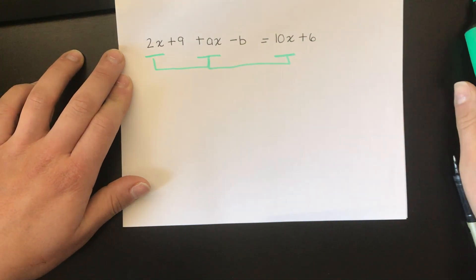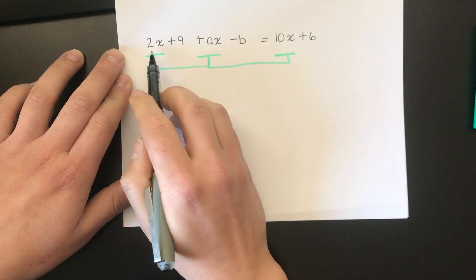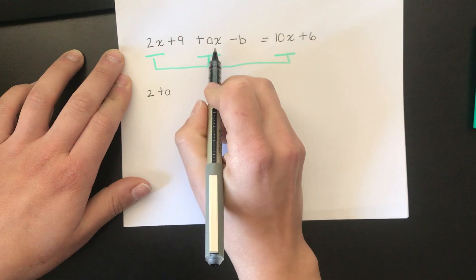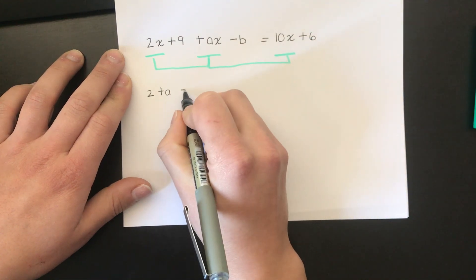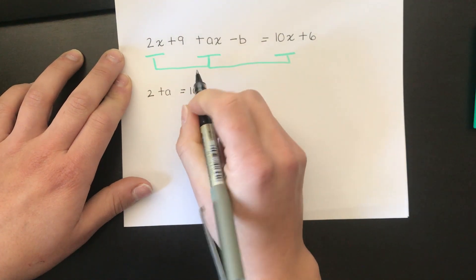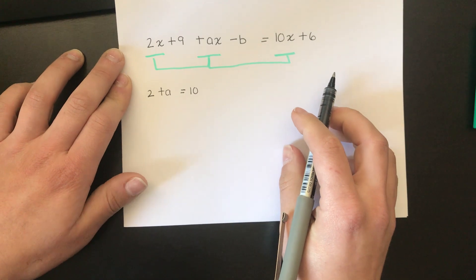From there I can write an equation. I can say that 2, the coefficient of x, plus a, the coefficient of this x, has to be equal to 10, the coefficient of this x. Now there's no other x's that I haven't highlighted, so I've taken care of all the different values of x.